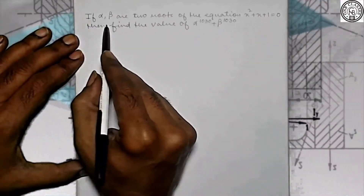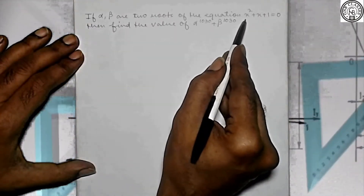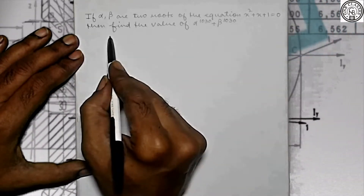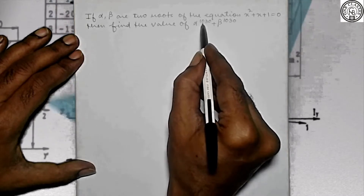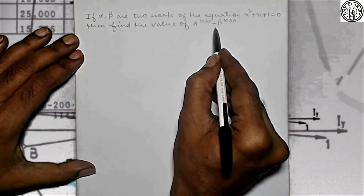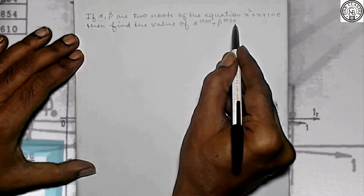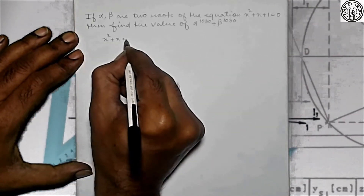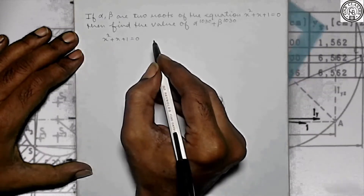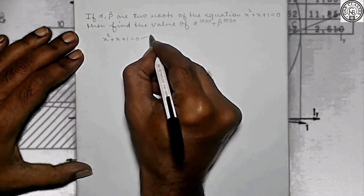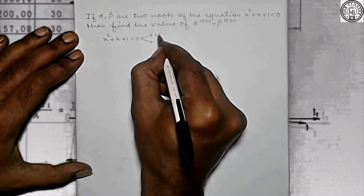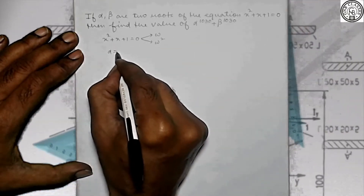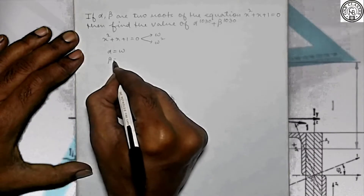See this question. If alpha, beta are the two roots of the equation x² + x + 1 = 0, then find the value of alpha to the power 1030 plus beta to the power 1030. By looking at this equation you should know, as we have discussed before, that the two roots will be omega and omega square. So alpha is omega and beta is omega square.